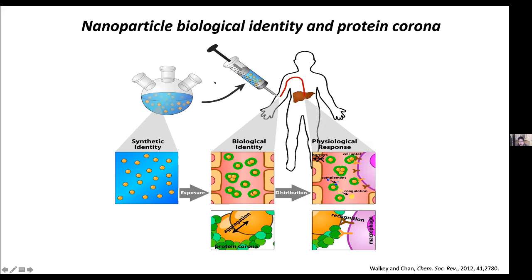However, when you inject nanoparticles into a patient, they interact with serum proteins. The nanoparticle starts to be coated with proteins—shown in green—or begins to aggregate into small clusters: dimers, trimers, and so on. This new surface chemistry around the nanoparticle is called the biological identity. Whatever you start off with has an impact on which proteins are brought to the surface, and it's those surface proteins that interact with cells as the nanoparticles travel through the body.